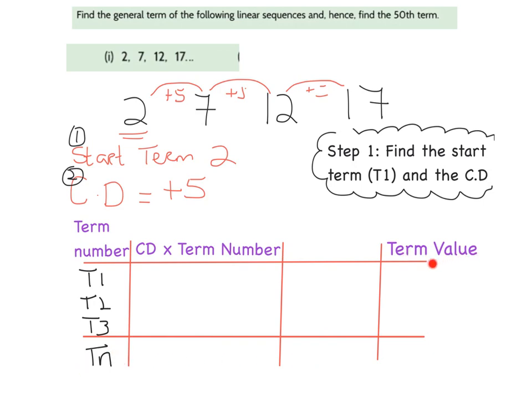The term value is the next column that we fill in. And so here we just say what exactly is term 1. And in this instance, term 1 is number 2. Term 2 is number 7. And term 3 is number 12. Okay. Within this column here, I'm going to leave this bit blank because I don't know what term n is yet.